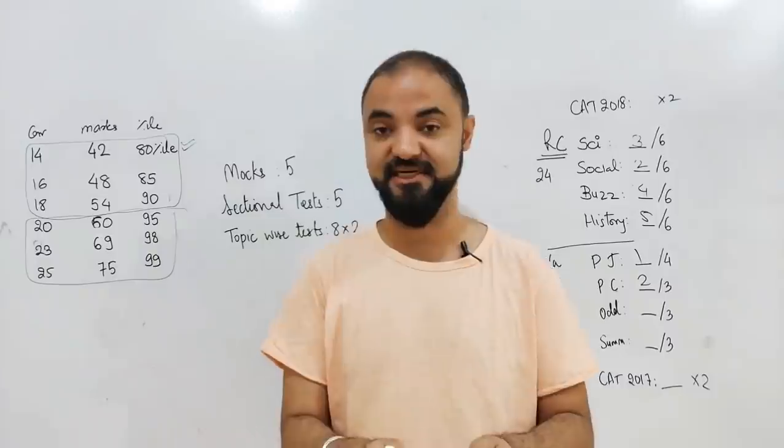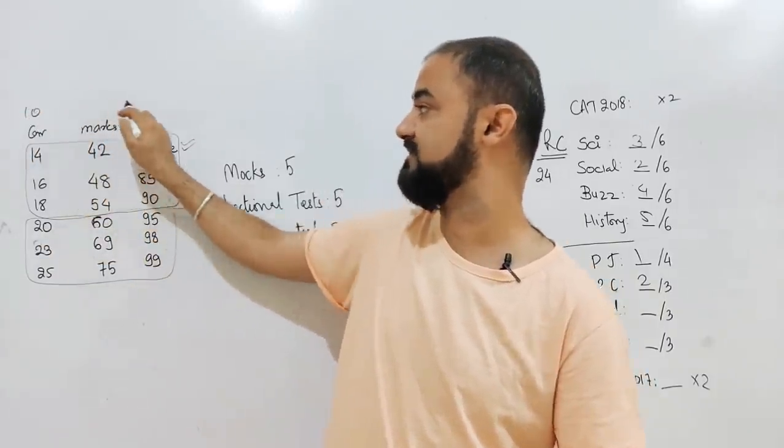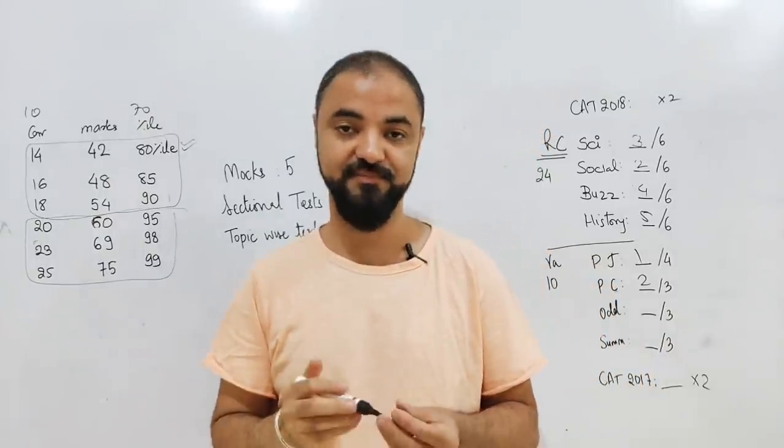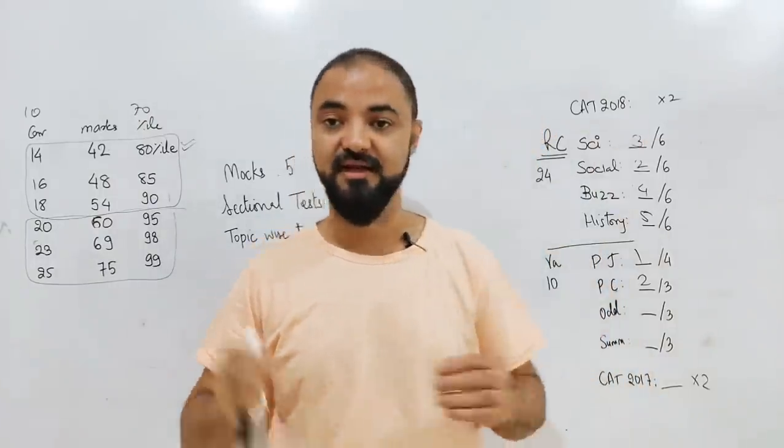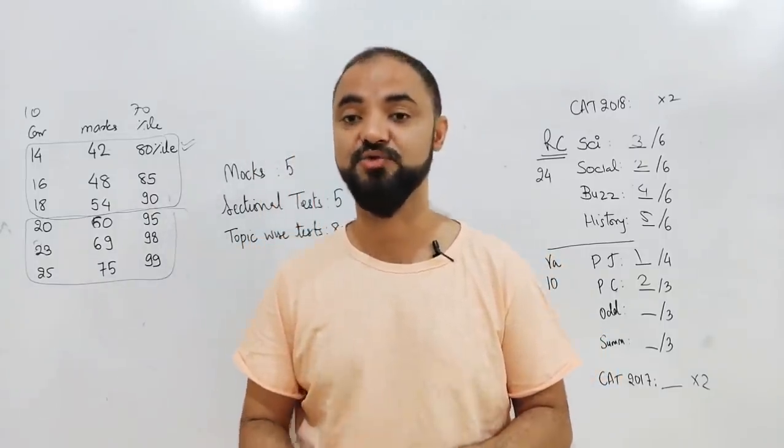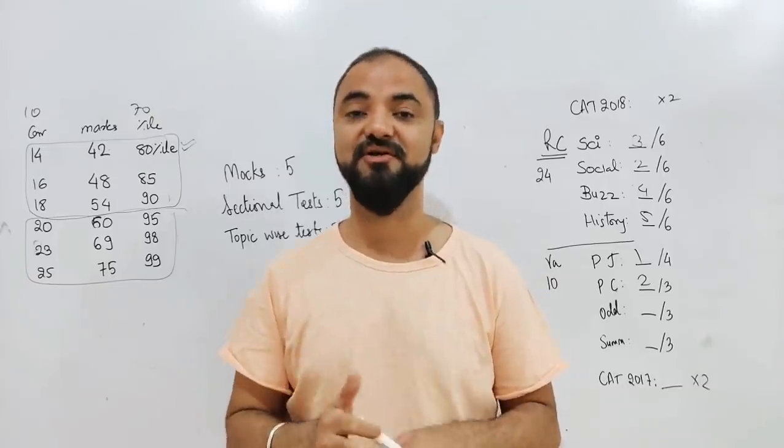You can trust me, easily improve your score by 10 percentile in the next 10 days. Suppose right now you're getting 10 questions correct, which is 70 percentile, you can easily touch 80 percentile overnight by doing a 10-day plan. 80 percentile, I can touch 90. 90 percentile, I can touch 99 percentile. That's how easy targets you can achieve.